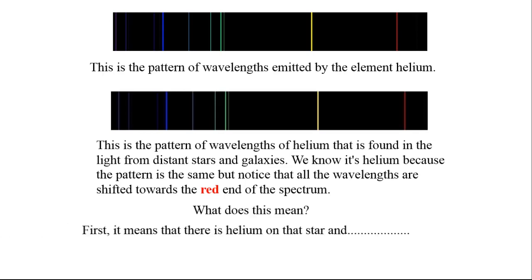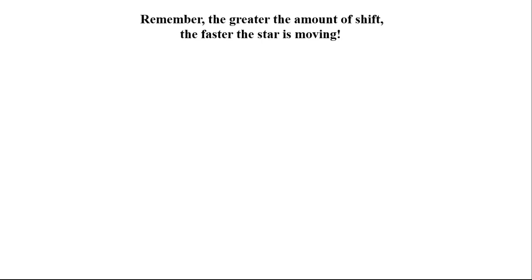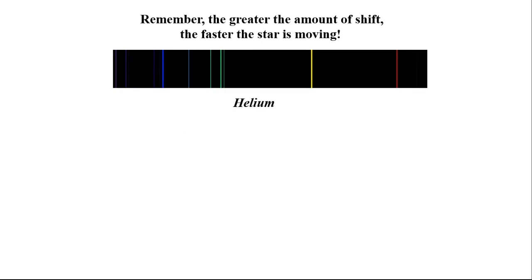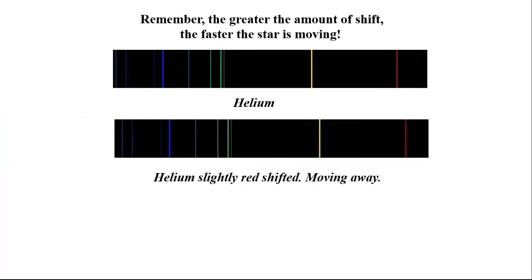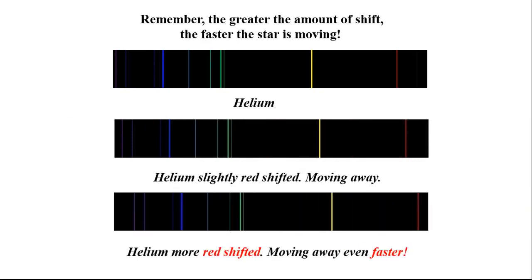What does this mean? First, it means that there is helium on that star, and second, it means that the star is moving away from us - red shift. Remember, the greater the amount of shift, the faster the star is moving. Helium atom, helium slightly red shifted (moving away), helium more red shifted (moving away even faster).